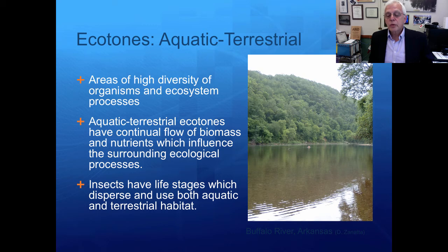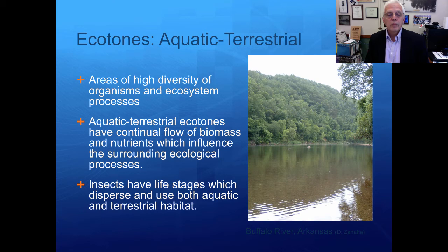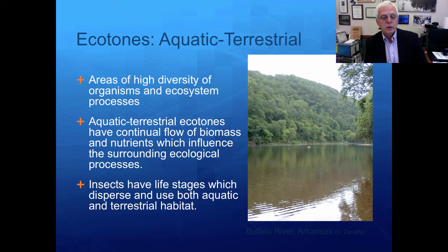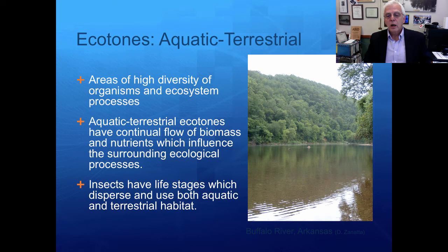The aquatic-terrestrial ecotone — the transition between two kinds of ecosystems — is similar to the flood pulse concept. These transition areas between terrestrial and aquatic environments are areas of high diversity of organisms and ecosystem processes. Aquatic and terrestrial ecotones have continual flow of biomass and nutrients across them, influencing surrounding ecological processes. Insects have life stages which disperse and use both parts of the ecotone, crossing material between the stream and the terrestrial ecosystem.